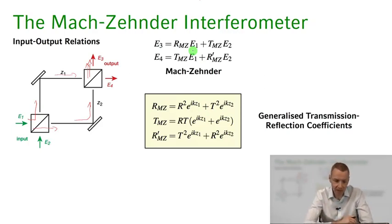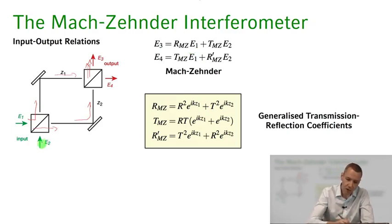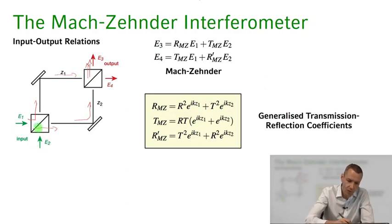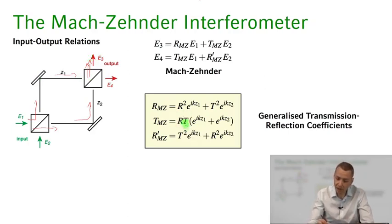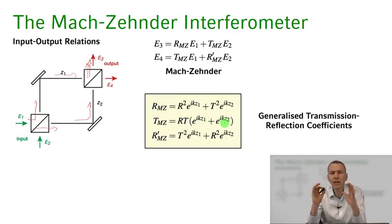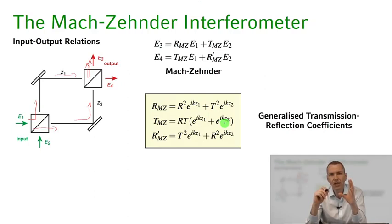Now let's look at how light coming in on port 2 can arrive at port 3. There are two possibilities: it can be first reflected, propagate on one path, and then transmitted; or first transmitted and then reflected along the upper path. This is given by r times t times the propagation phases along those two paths. This makes the Mach-Zehnder as a generalized beam splitter somewhat different from the symmetric beam splitter we introduced.